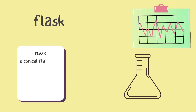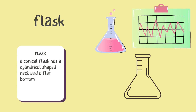A conical flask. A conical flask has a cylindrically shaped neck and a flat bottom. It has measurements on the side. It is similar to a beaker but has a cone-shaped body.